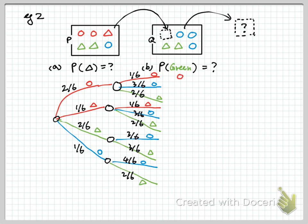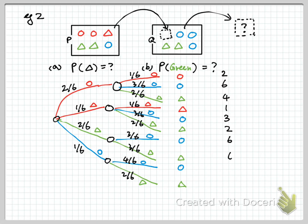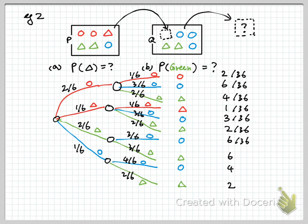So let's see what happens at the end. We have a red circle, a red triangle, blue circles, and green triangles as final outcomes. We can calculate the probability for each event — they are all divided by 36. So we have 2, 6, 4, 1, 3, 2 — these numbers come from multiplying the branches leading to that event. I have to add up all these numbers to make sure they add up to 1 to check the integrity of the tree diagram.